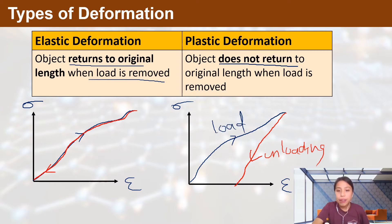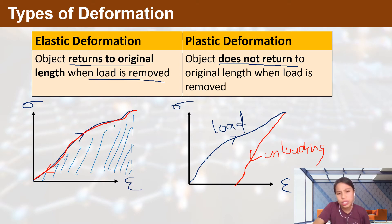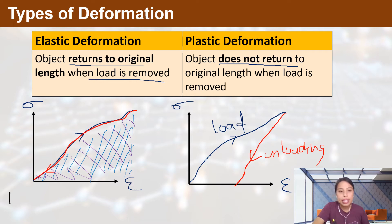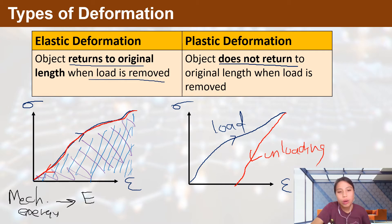The area under the graph is different. If you load to a certain point, the energy used to stretch or squash the item to that point is the blue area. When you unload, that is the purple area — they are exactly the same. No energy loss. Whatever you store as mechanical energy is stored as strain energy, and then you can get all the energy back as mechanical energy.